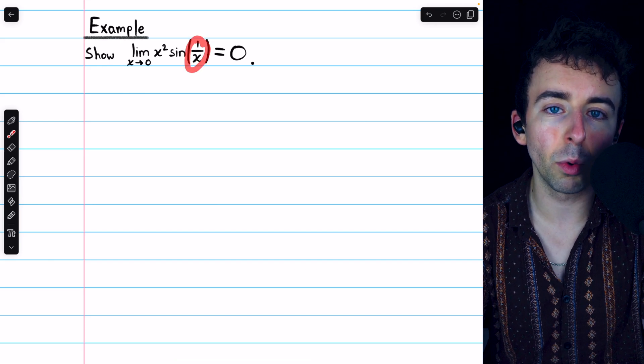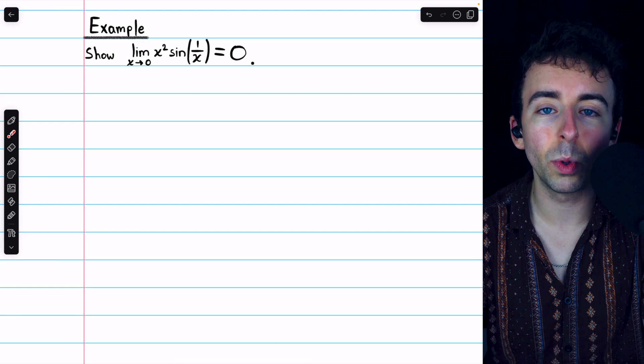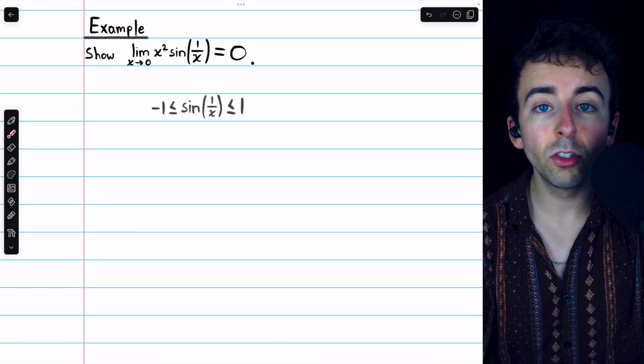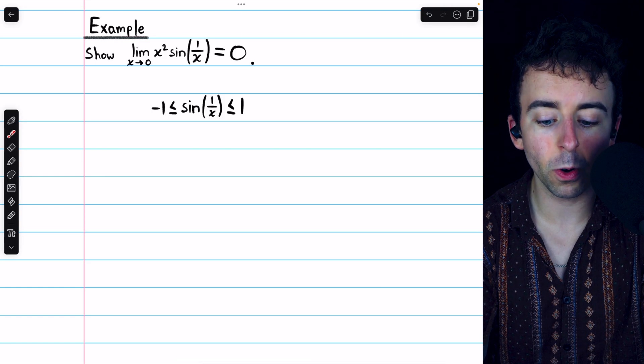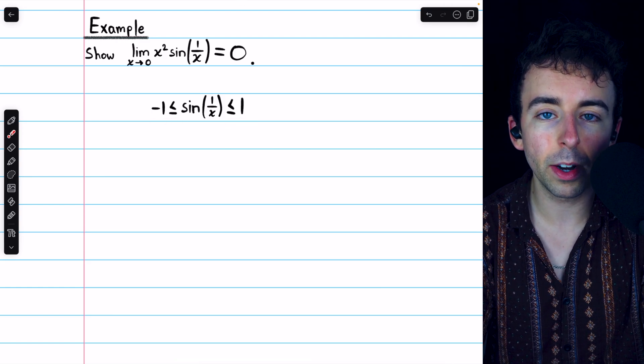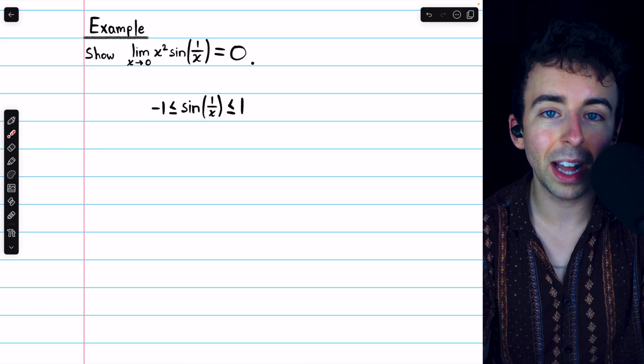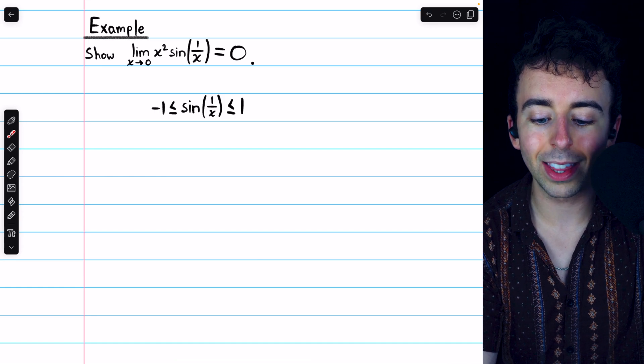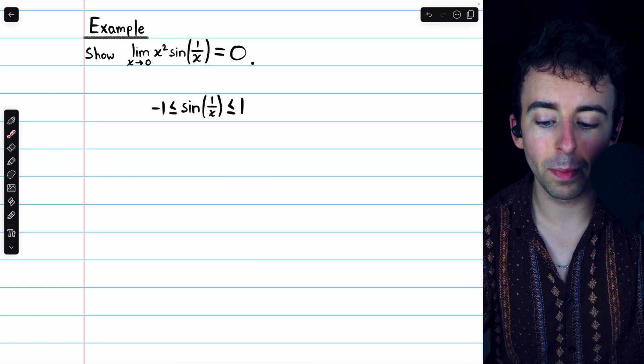Which we know is always between negative 1 and positive 1. Don't let the strange input of 1/x throw you off. It is still a sine function. It must be between negative 1 and positive 1. So we can start there with what we know, that sin(1/x) for sure is at least -1, and at most positive 1.